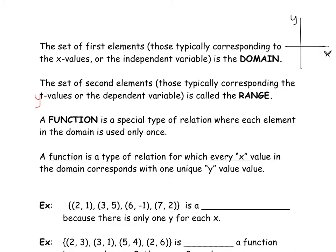A function is a special type of relation where each element in the domain — all the x values — is only used once. A function is a relationship where every x value corresponds to only one unique y value. My best description of a function is a computer: if you plug the letter S into your computer, only an S shows up on your screen. There isn't three or four different things happening. So for every x value, only one unique y value appears.